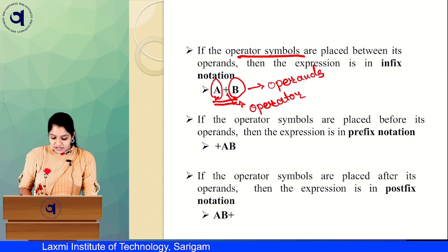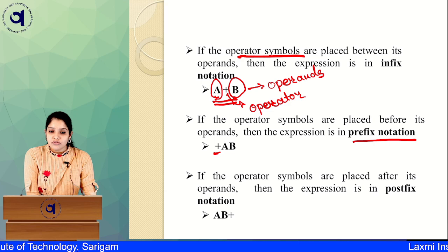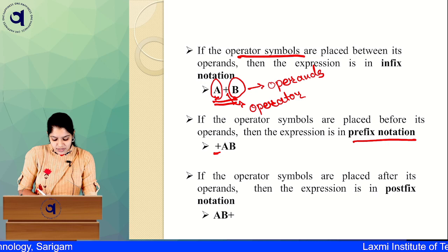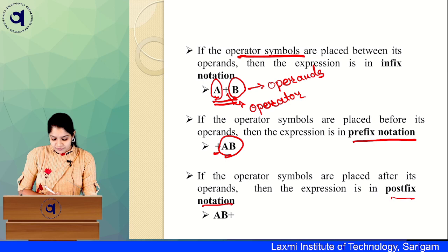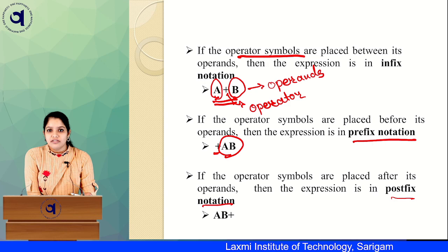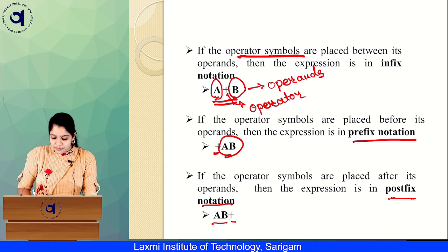Similarly we have prefix notation. In prefix notation the operator symbol is placed before the operands. So if we have operands 'a' and 'b', then '+' is placed before them, giving '+ab' — that is known as prefix notation. Then we have postfix notation, where the operator is placed after the operands, giving 'ab+' — that is postfix notation.